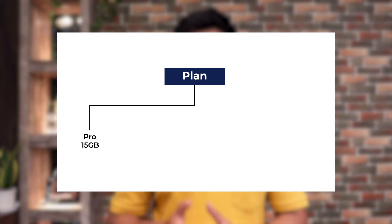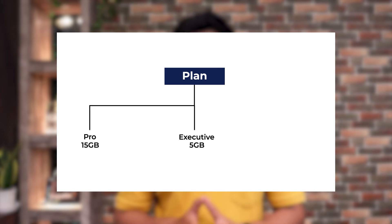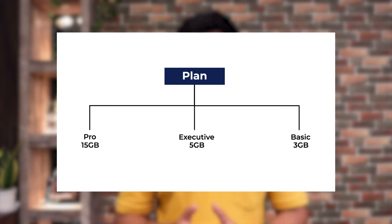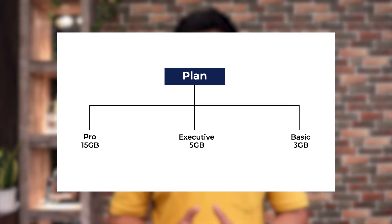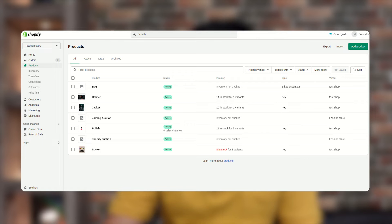Let's talk about the storage capacity for digital products. Webkul provides three plans: the Pro plan gives you 15 GB of storage, the Executive plan gives you 5 GB of storage, and the Basic plan gives you 3 GB of storage. You can choose any one of them as per your convenience and use.